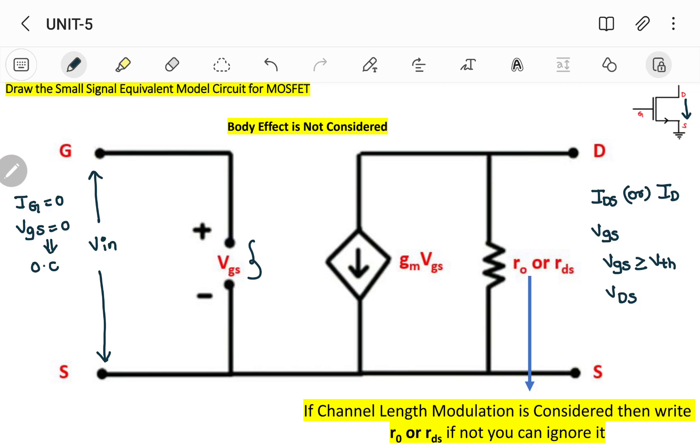This particular current is depending upon VGS. So we have to write here as gm times VGS, and the arrow mark will be downward. If you observe, it is from drain to source. That's the reason I've taken the arrow mark downward from drain to source.